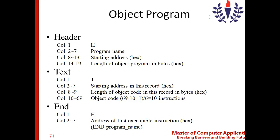Let us move on to the next record — the text record. The text record is an important one in the object program, where exactly the object code is stored. T denotes a text record, along with a starting address for this record. The assembler, when it generates the object program, keeps all the generated object code stored inside the text record.